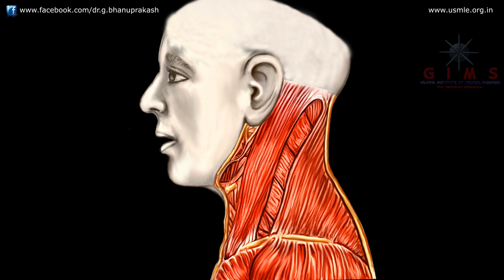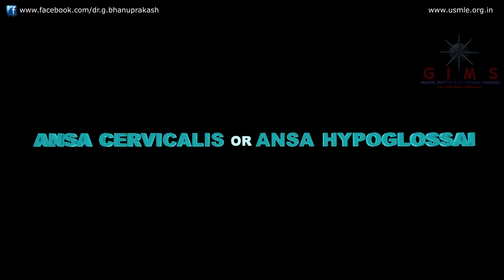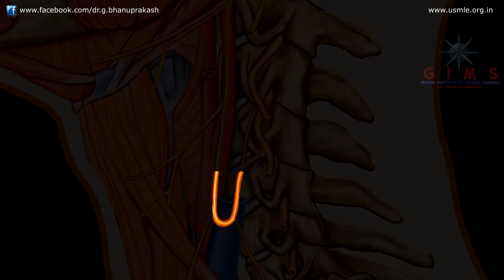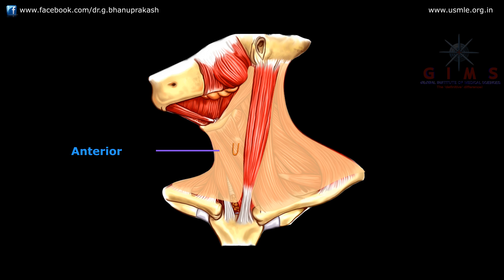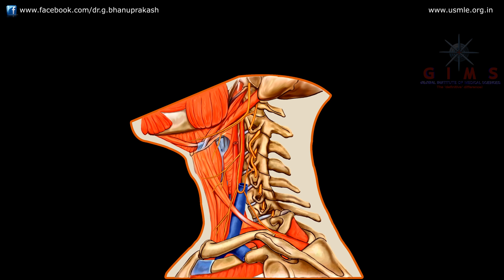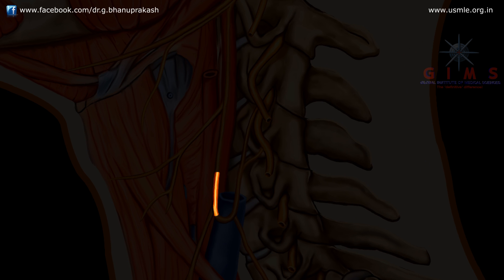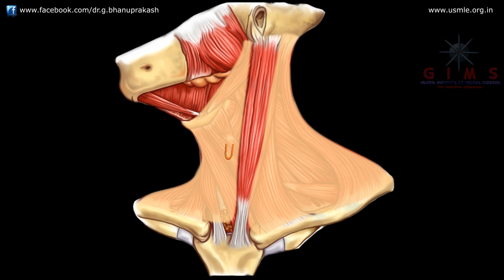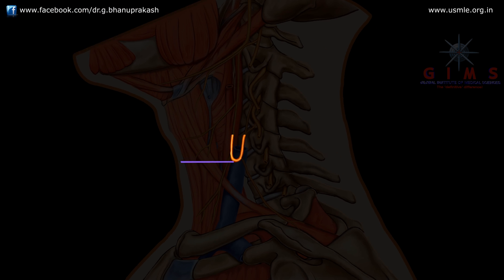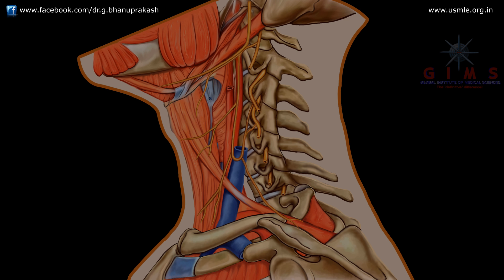The next topic of the anterior triangle of the neck is the ansa cervicalis, also known as the ansa hypoglossi. The ansa cervicalis is a thin nerve loop located in the anterior wall of the carotid sheath. The carotid sheath has two walls: the anterior wall and the posterior wall. This nerve loop extends towards the lower part of the larynx and mainly gives branches to supply the infrahyoid muscles.